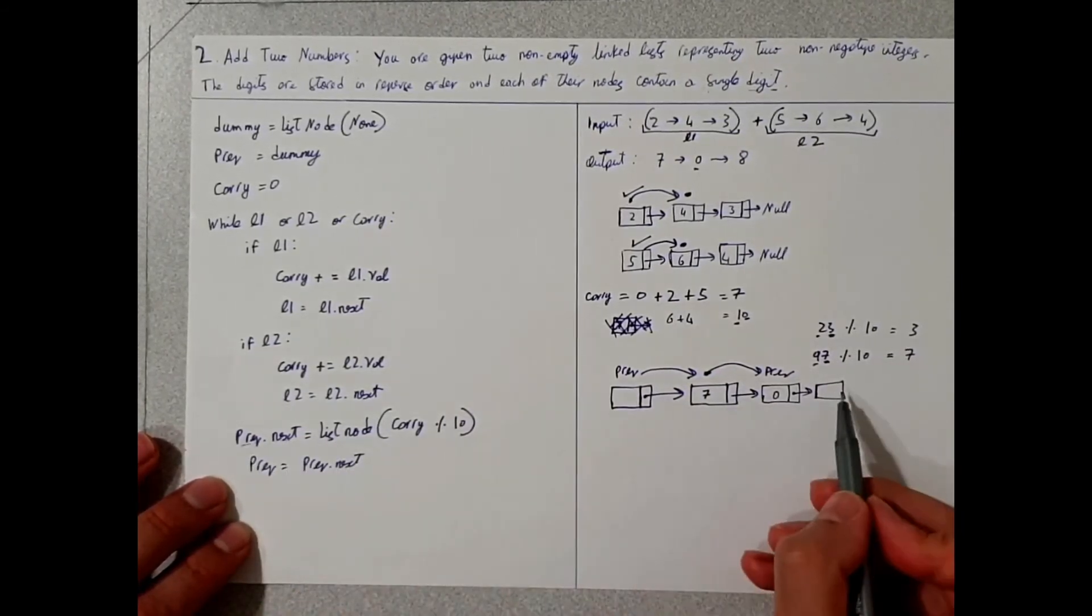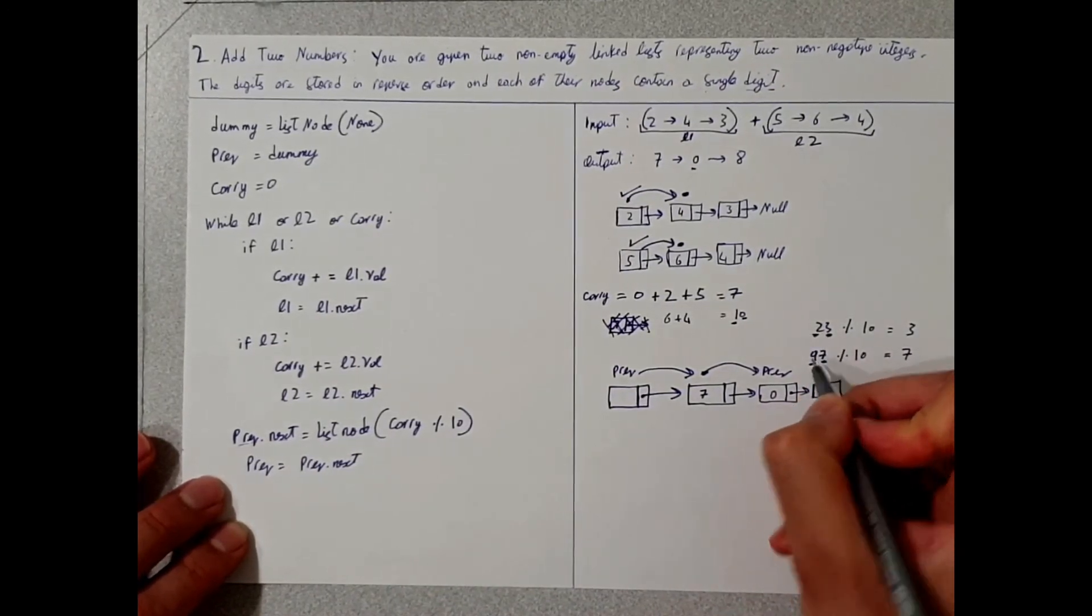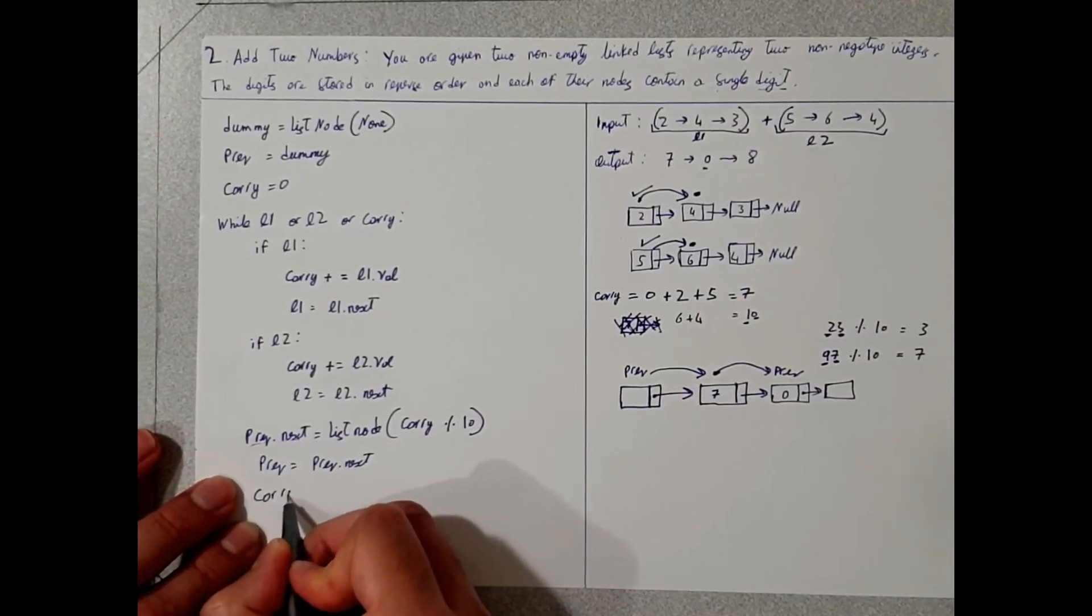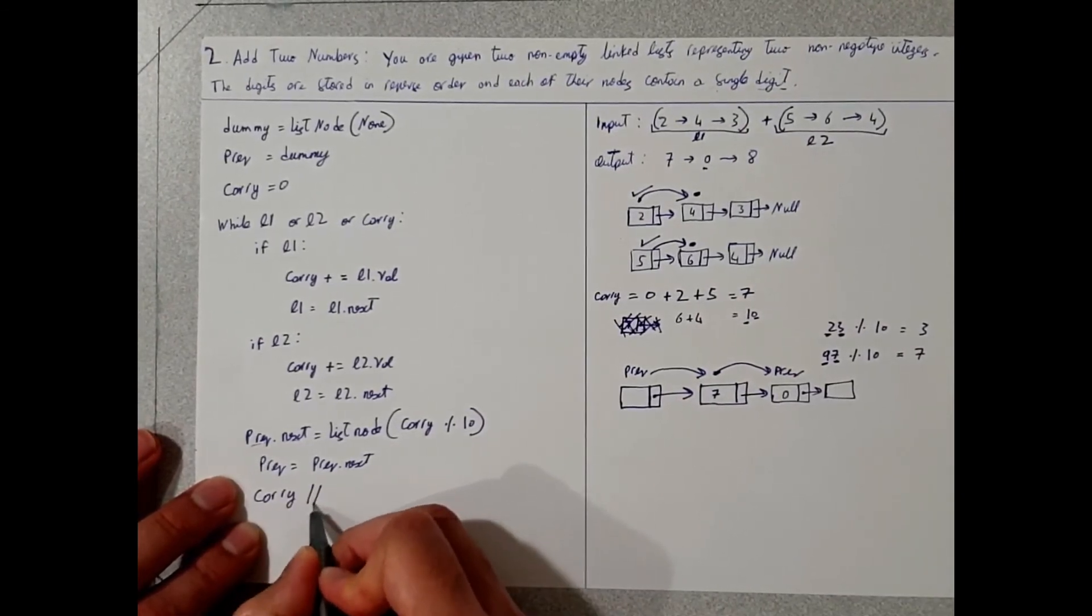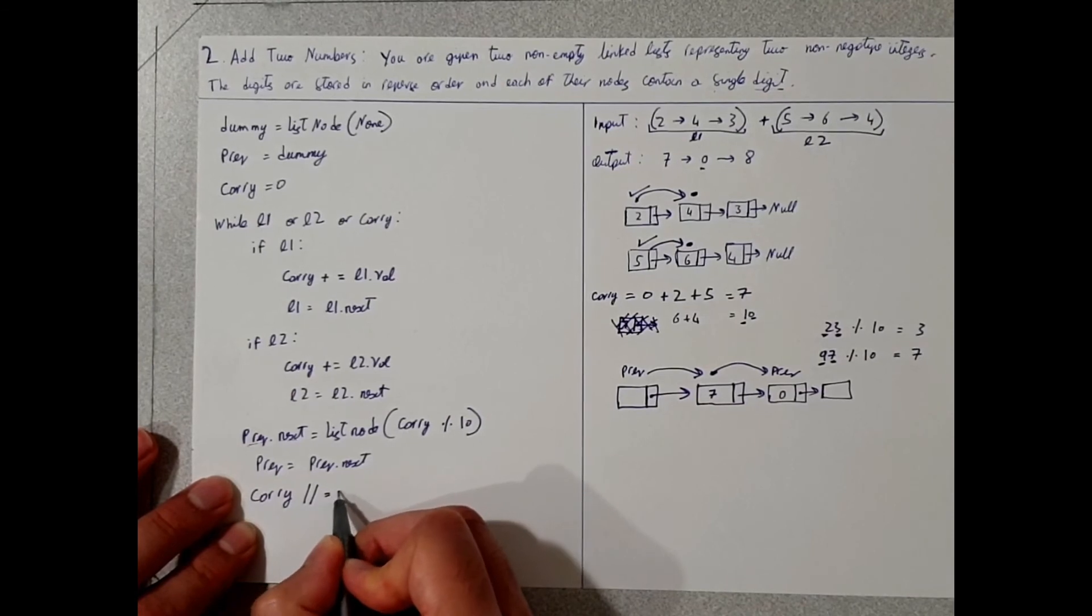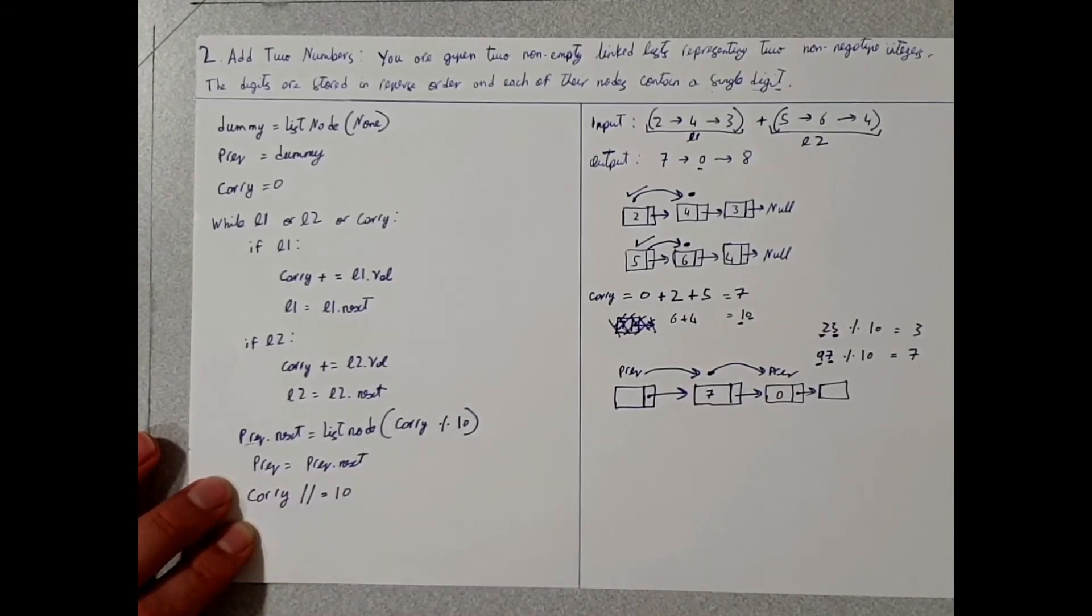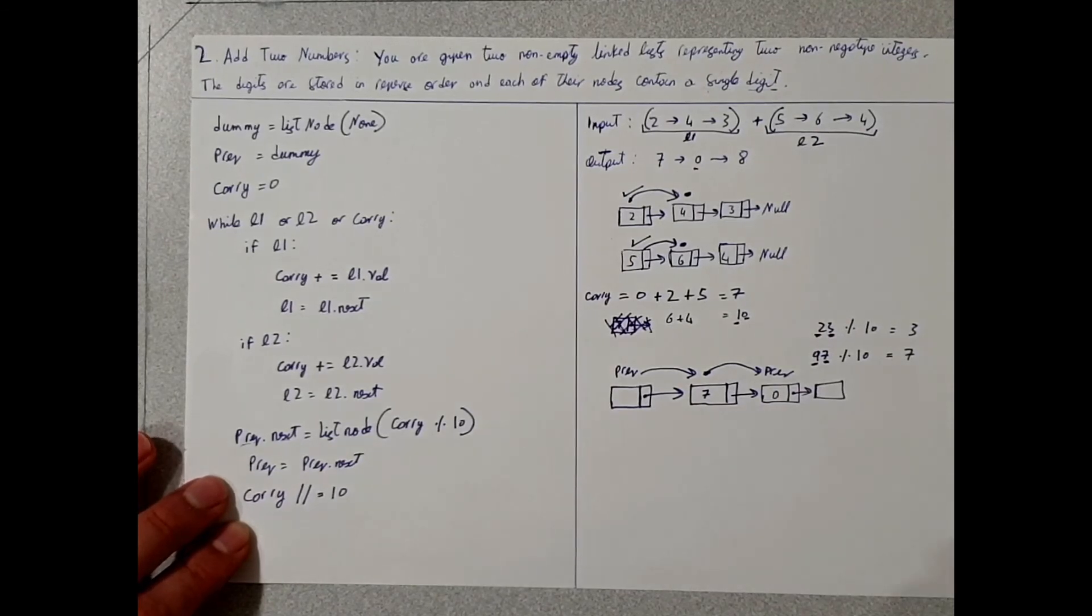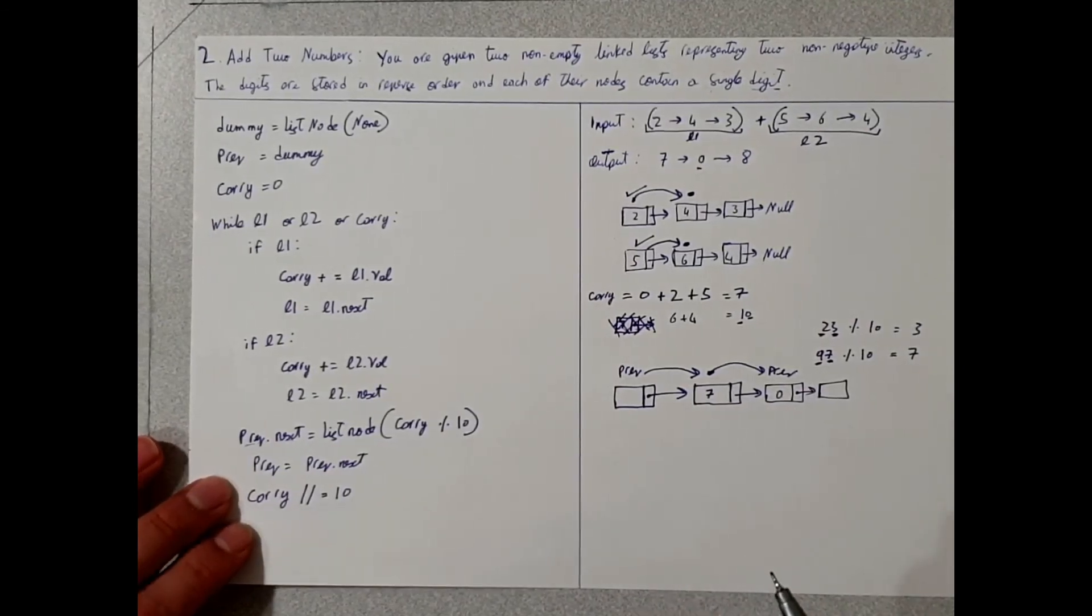This one here will be pointing at the next list node. So what do we do with the two and the remaining line over here? We simply do an integer division. So what's an integer division? An integer division is basically subtracting and dividing a number, but without taking back, without taking the remainder.